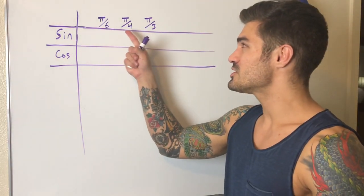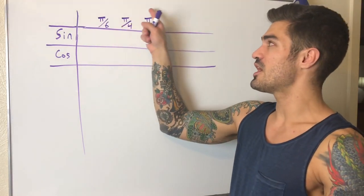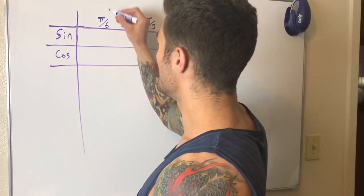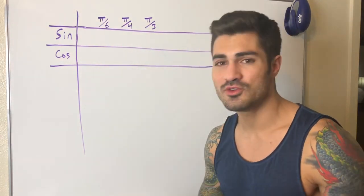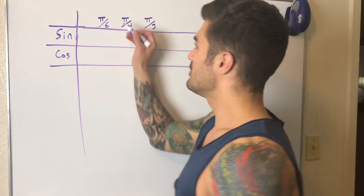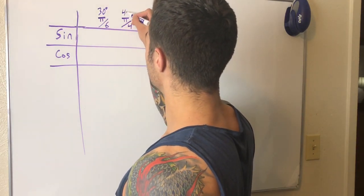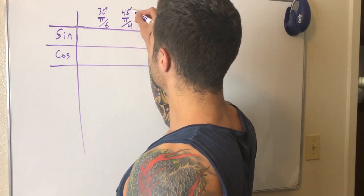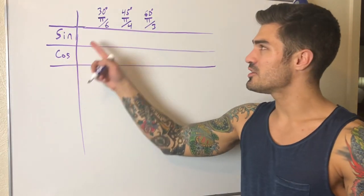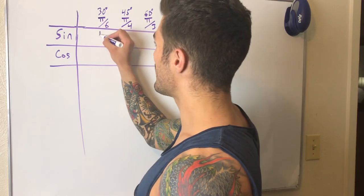So let's get started. I write π/6, π/4, π/3 — which is just 30, 45, 60 degrees. I use radians mostly, but I'll write the degrees up here just so we're clear. These are the angles, and we have the sine and cosine of these angles.